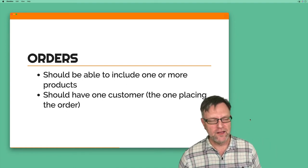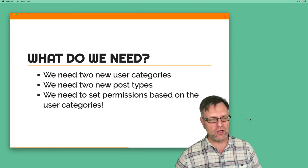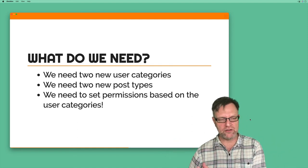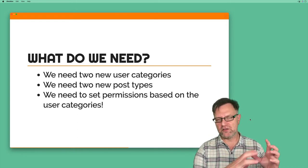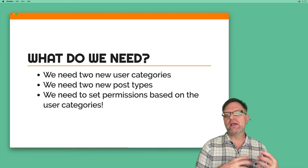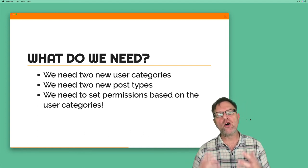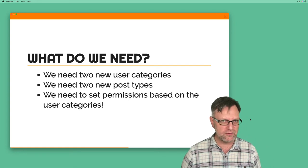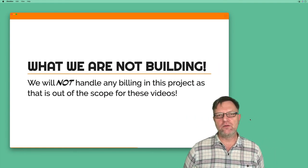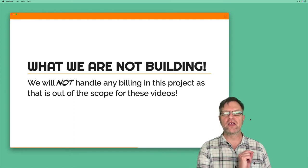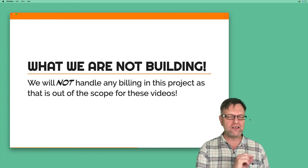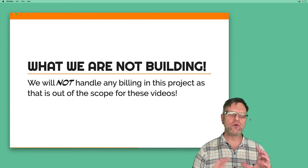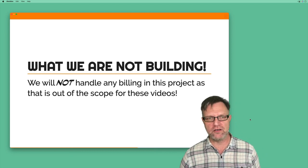So that is what we're aiming for. We need two new user categories — customer and creator — and two new post types for products and orders. We also need a permission system based on user categories. Importantly, we will not handle any billing whatsoever in this series, as that is out of scope. Here we are concentrating on the Pods framework.